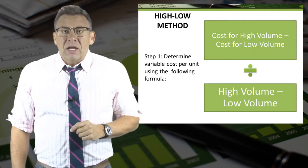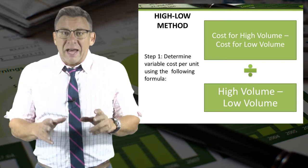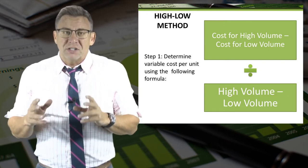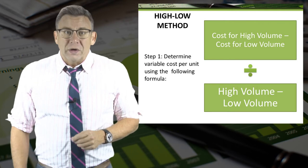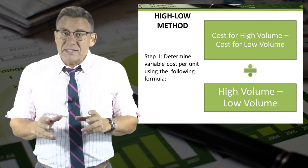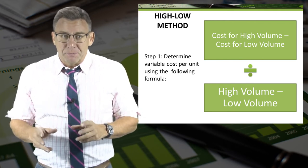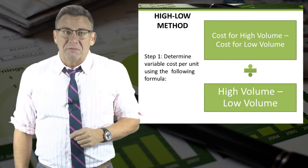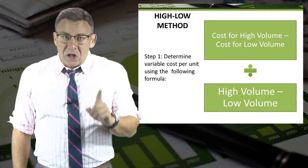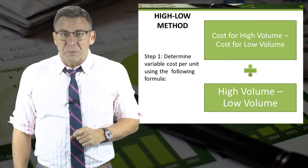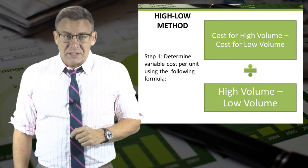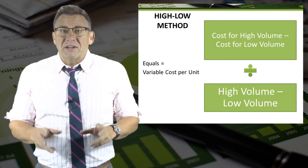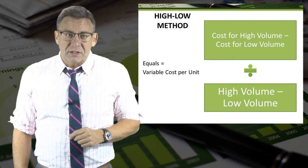The first step is to divide the changes in cost by the changes in volume. We take the cost at the high level of volume and subtract the cost at the low level of volume. It is volume that determines high and low, not cost. This calculation will give us the variable cost per unit.